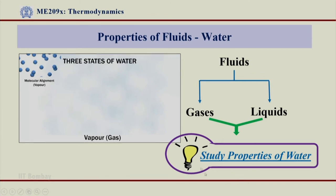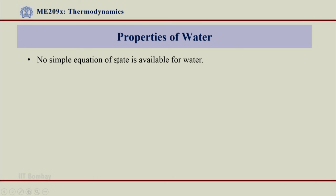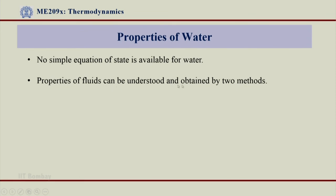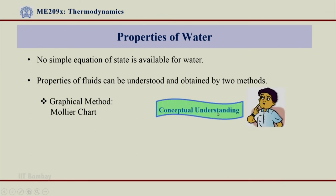My further discussion will revolve around water vapor — water in gaseous phase, water in liquid phase, and water as gas plus liquid together. There is no simple equation of state available for water, which is true for liquids also. The properties of fluids can be obtained by two methods: we can use a graphical methodology — the Mollier chart — which gives some conceptual understanding, but we cannot get actual accurate values from a graphical method.